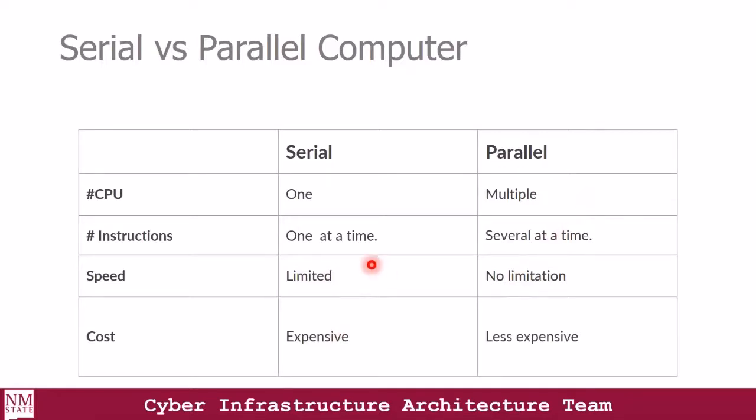Now talking about cost, one of the factors we want to consider is time. Time is an expensive factor when it comes to serial computing, but with parallel computing it is less expensive because we don't waste time — instructions are being processed faster than in the serial computing environment.